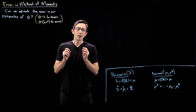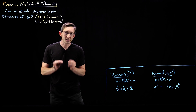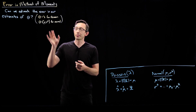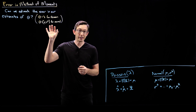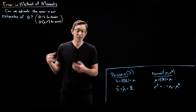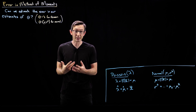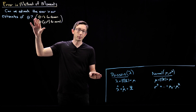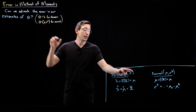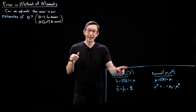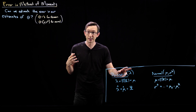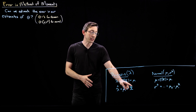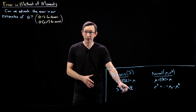Welcome back. We've introduced the method of moments, which is a way of estimating the parameters of a distribution from data. For example, for the Poisson distribution, you can get an estimate of the parameter lambda using data, and that lambda hat is just the sample mean x bar.